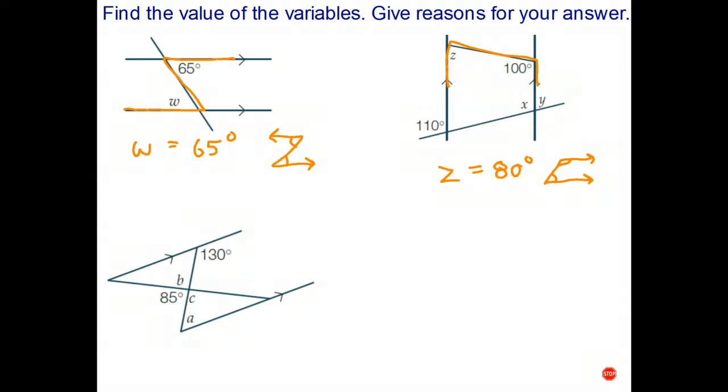I might change the color of my pen, I'll make it green in this case. So here we have 110 degrees, and here we have 110 degrees, and here we have an angle marked x. Well that's the F rule, and therefore we know that x equals 110 degrees.